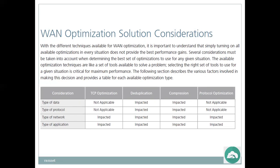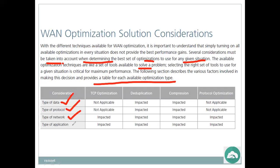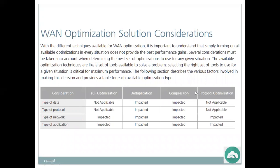Solution considerations: with the different techniques available for WAN optimization, it is important to understand that simply turning on all available optimizations in every situation does not provide the best performance gains. Several considerations must be taken into account when determining the best set of optimizations to use for any given situation. The available optimization techniques are a set of tools — selecting the right set of tools for the given situation is critical for maximum performance.